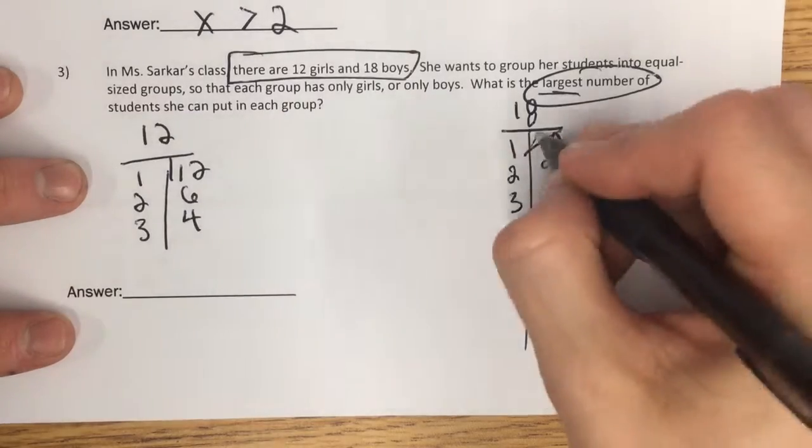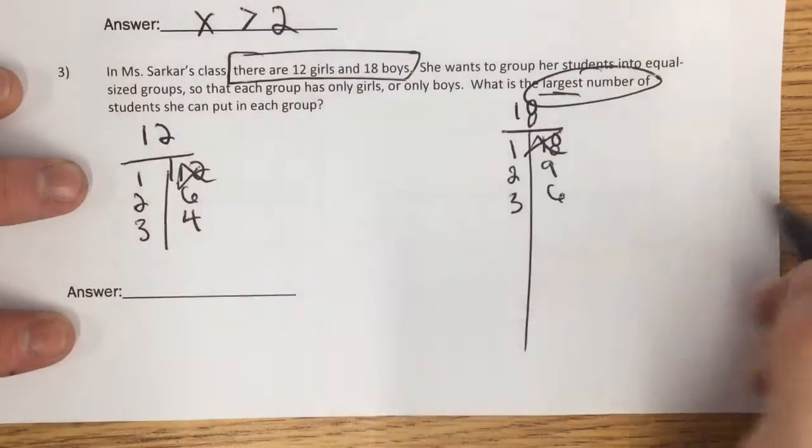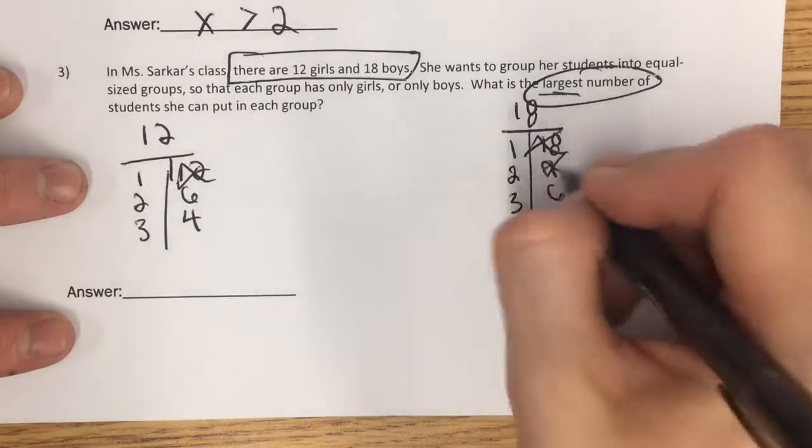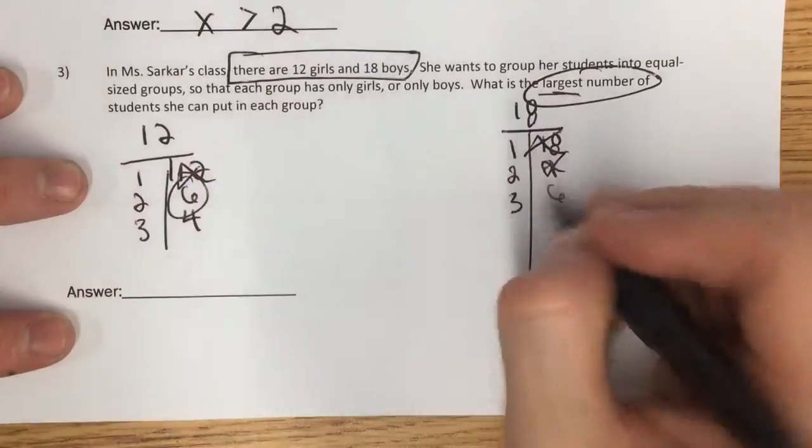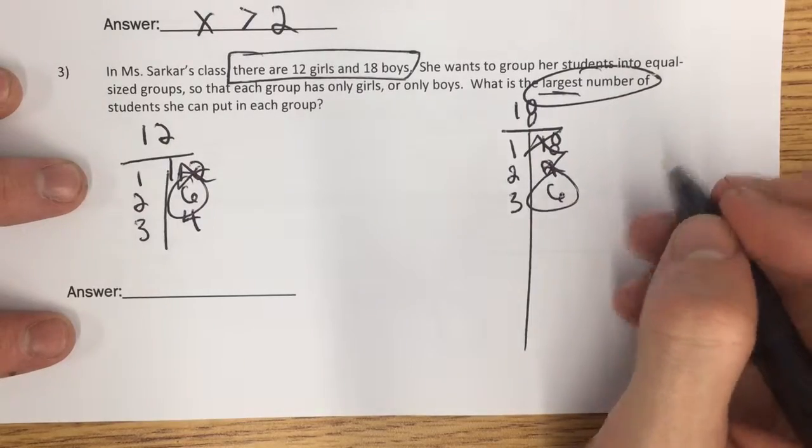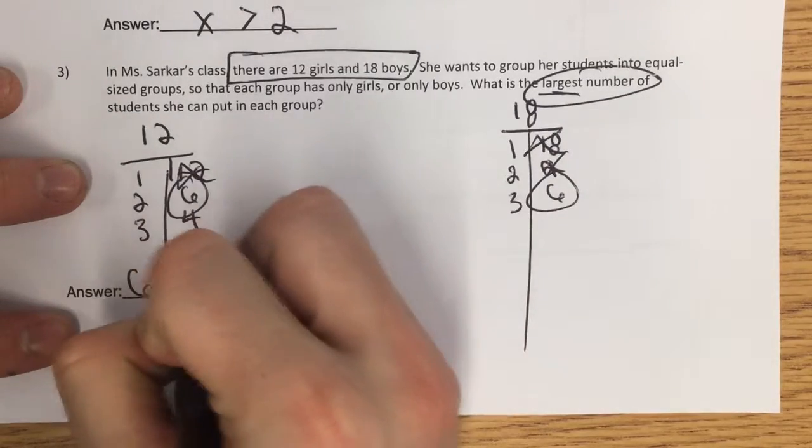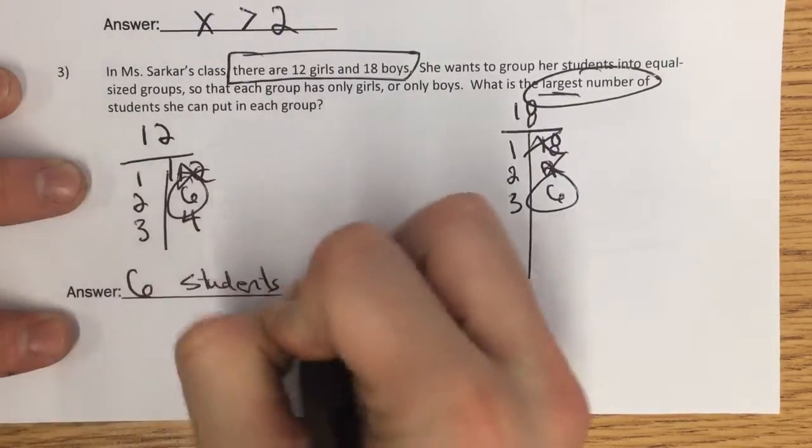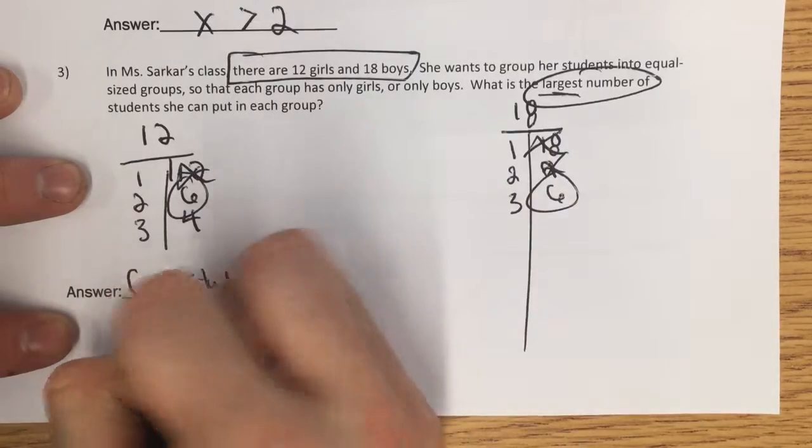Let's find it. They don't share 18, they don't share 12, they don't share 9, but look, they both share 6. So we can put 6 students in each group.